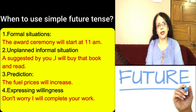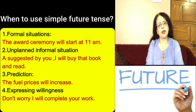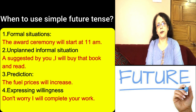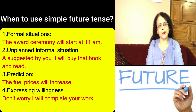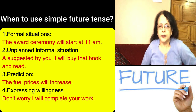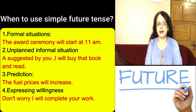Second situation: unplanned informal situations. Even if the situation is informal and it is unplanned, we use simple future tense. For example: as suggested by you, I will buy that book and read. Third: making predictions. For example, the fuel price will increase. It will rain tomorrow. The school will remain closed tomorrow. The fourth situation is expressing willingness. For example: Don't worry, I will complete your work.